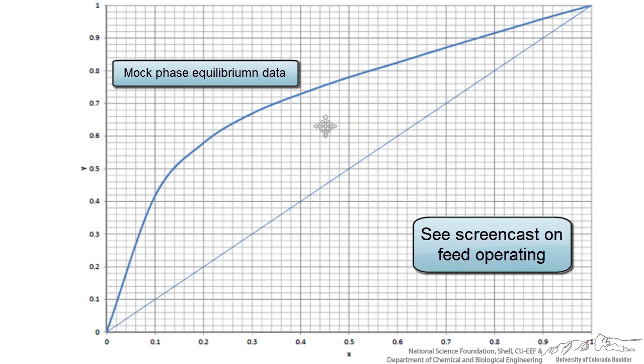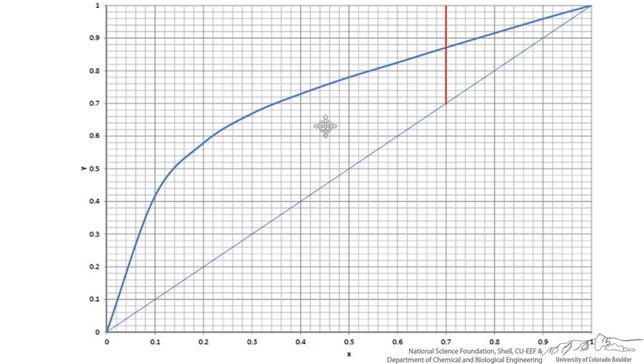We are told we have saturated liquid at 0.7. So a saturated liquid operating line would be vertical from our 0.7 shown like this. We know that our rectifying operating line has to intersect at the distillate composition on the x equals y line which would be at 0.95.